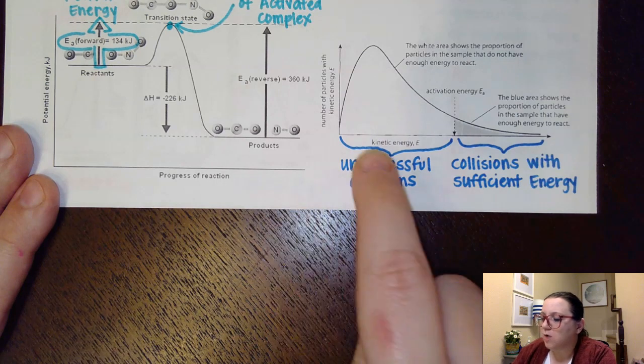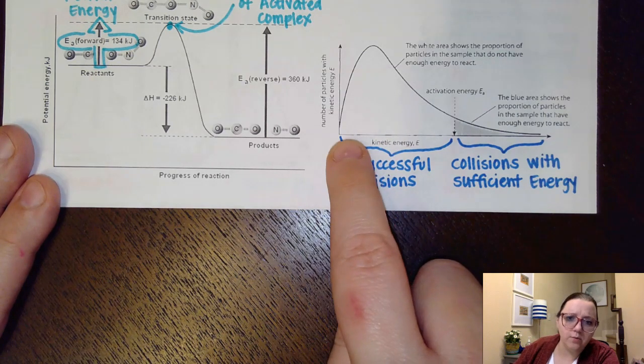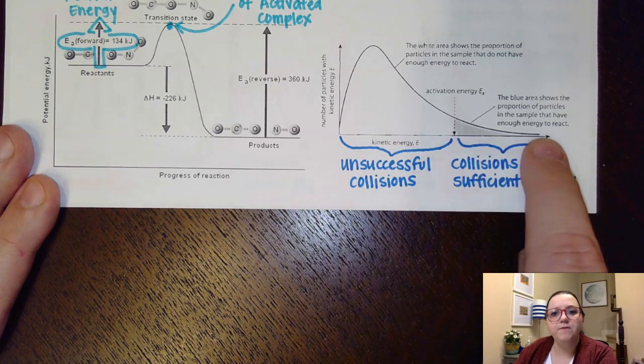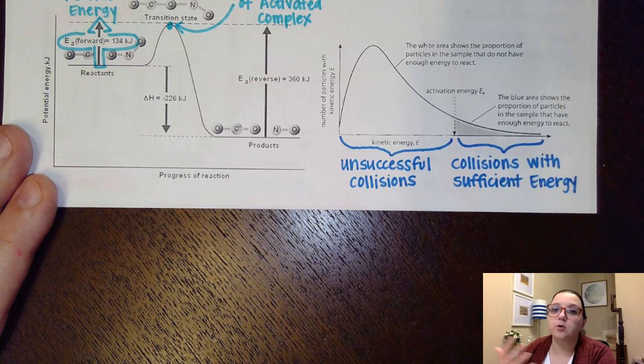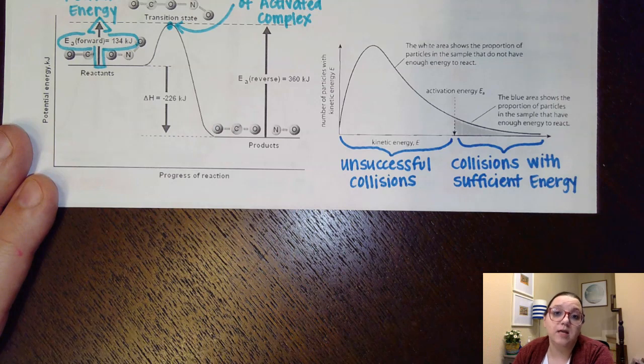So as kind of a reminder, right around where the peak is is usually kind of the approximate average temperature of that substance, but you're always going to have particles that are moving slower than that and particles that are moving faster than that. So imagine you have this range of particle speeds that are happening in your sample.